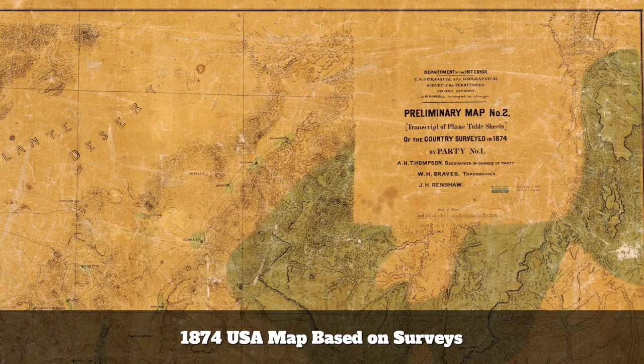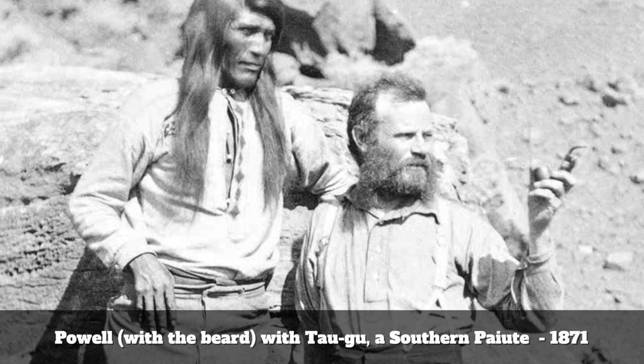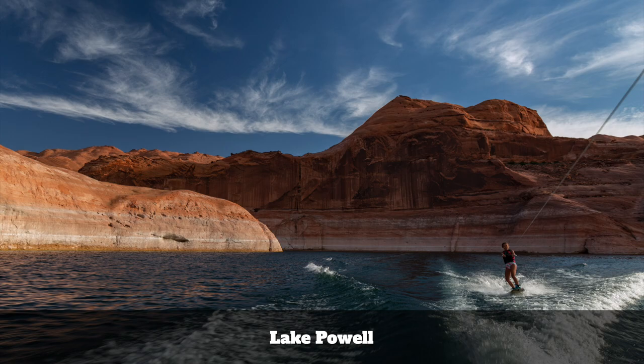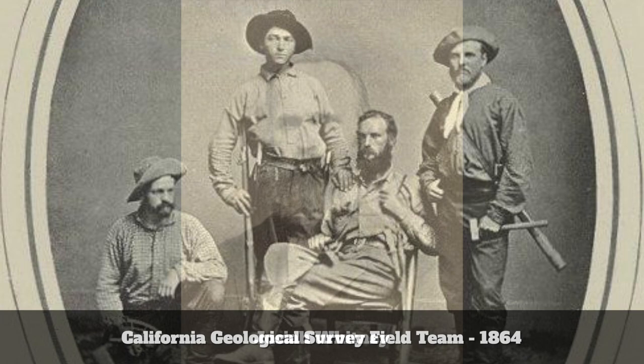A famous one was led by John Wesley Powell. He was tasked with surveying the Rockies, and if you've been to Arizona and the Grand Canyon, you see Powell's name all over the place. I believe he was the first gringo to go down the Colorado River through the Grand Canyon — don't quote me on that, but he was one of the first. There was also one in California called the California Geological Survey, led by a guy called Josiah D. Whitney, who Mount Whitney is named after.